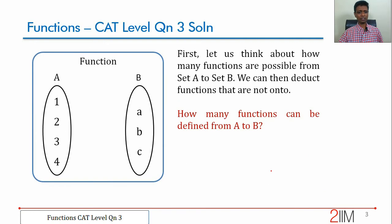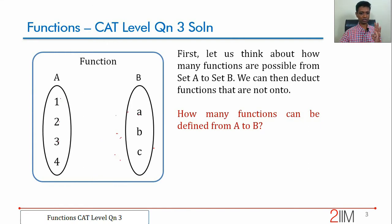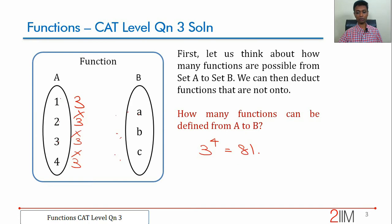First, let us count the total number of functions. Each of 1, 2, 3, 4 can be mapped to a, b, or c — three options each. So the total number of functions is 3 × 3 × 3 × 3 = 3 power 4 = 81.